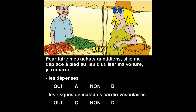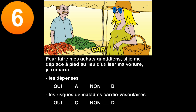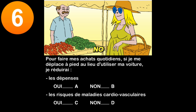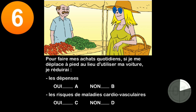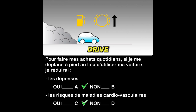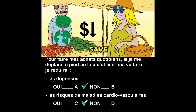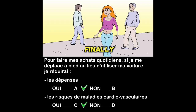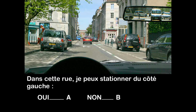Question six: to do my daily shopping, if I travel on foot instead of using my car, will I reduce expenses? Yes (A) or no (B)? Reduce the risks of cardiovascular disease? Yes (C) or no (D)? Using a car is never free — driving consumes fuel and wears vehicle parts, and it consumes more fuel on short trips. By moving on foot, I save money, avoid polluting the atmosphere, and walking at least 30 minutes a day reduces the risk of cardiovascular diseases.